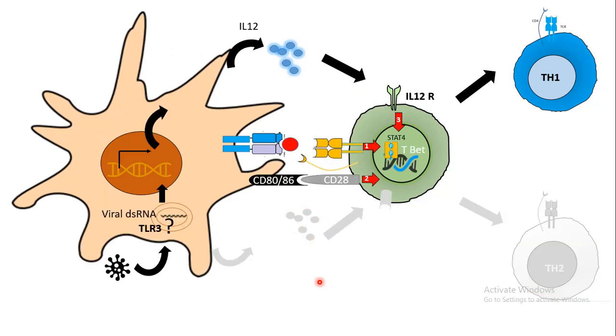Let me give an example. A virus has invaded a cell and the viral dsRNA is detected by intracellular TLR, TLR3, which signals inside the dendritic cell to produce a lot of interleukin-12. Interleukin-12 works like a polarizing cytokine.